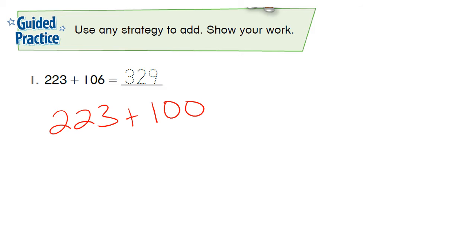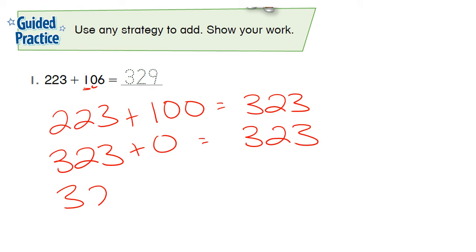So 223 plus 100, because that's the hundreds place value, that is going to equal 323. Then we're going to take 323. Now there's nothing in the tens place value. You don't actually have to write this one down, but 323 plus zero is 323. And then 323 plus six is 329. So that's the solution for problem number one.